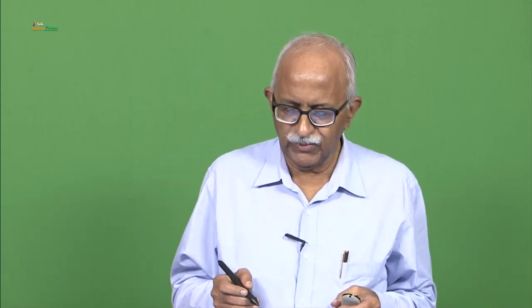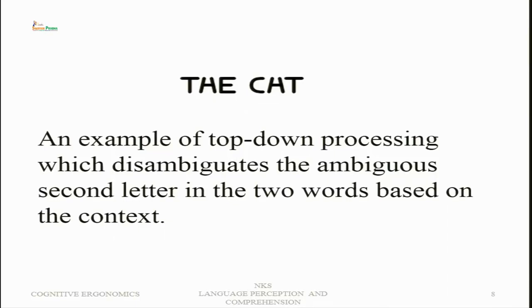Here is an example of context: the same shape is read as 'H' in one word and as 'A' in another word — for example 'the' and 'cat'. Independently, this shape would create ambiguity about whether it is an 'H' or an 'A'. This ambiguity is disambiguated by the particular context in which the shape occurs.